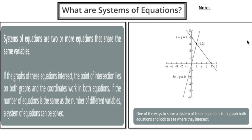So what exactly is a system of linear equations? Systems of equations are two or more equations that share the same variables. If the graphs of these equations intersect, the point of intersection lies on both graphs and the coordinates work in both equations. If the number of equations is the same as the number of different variables, a system of equations can be solved.